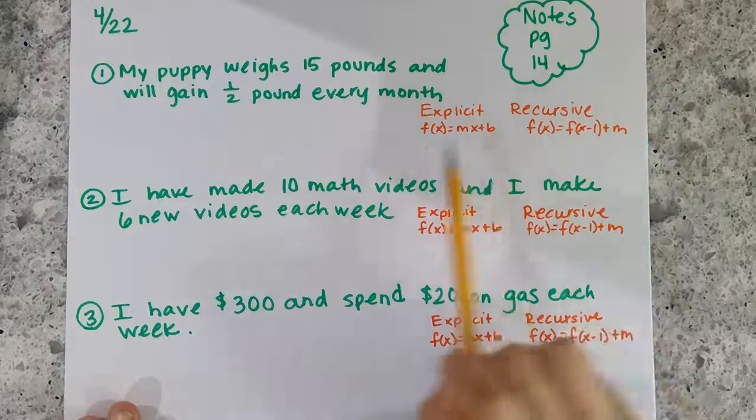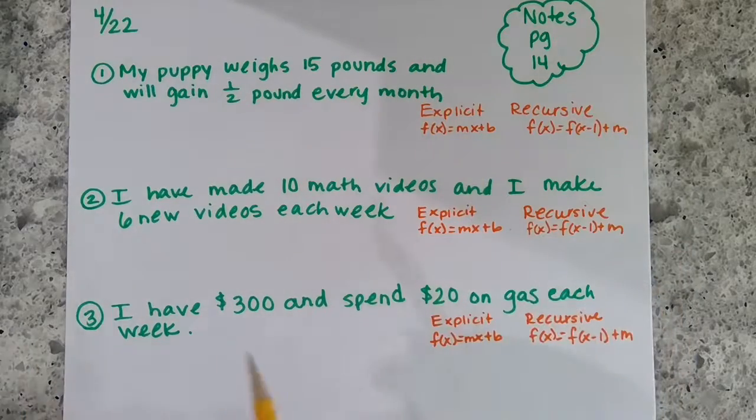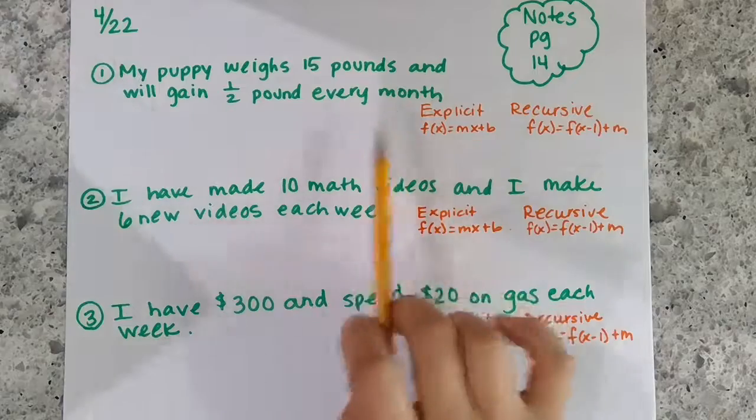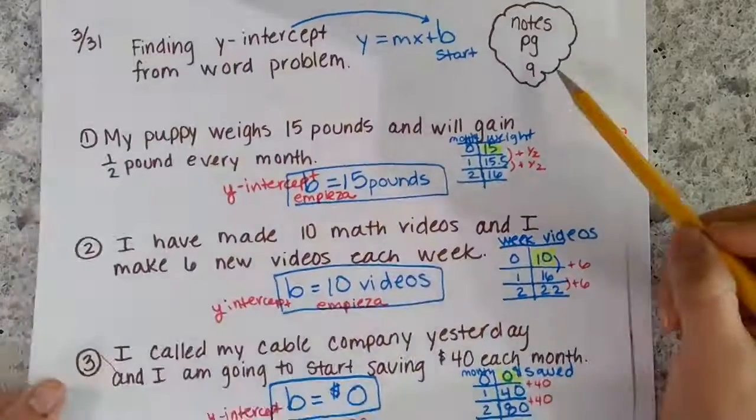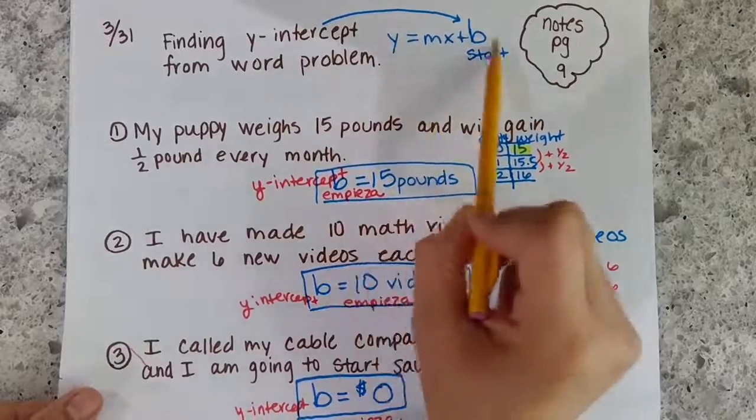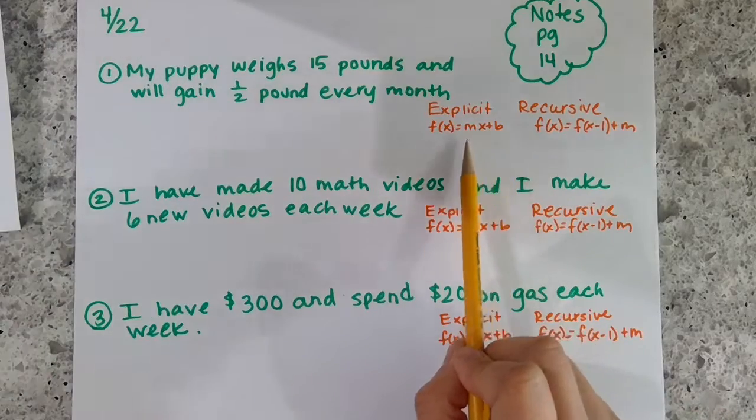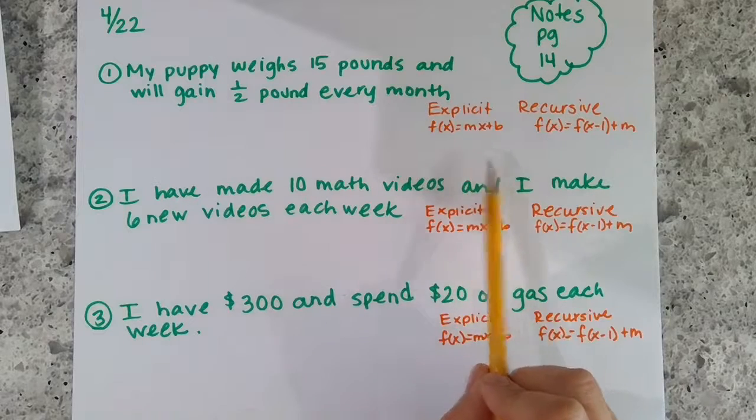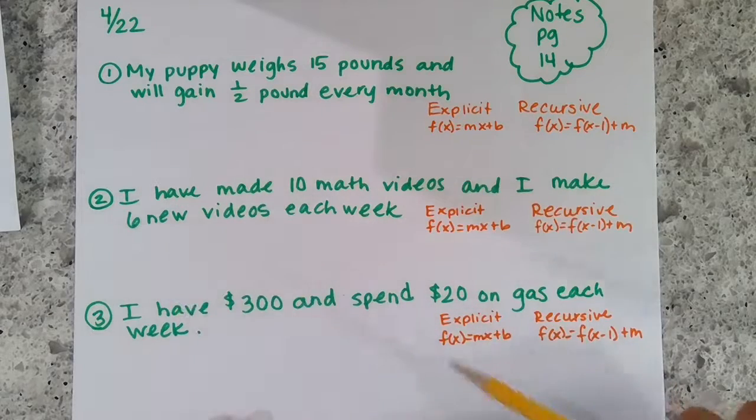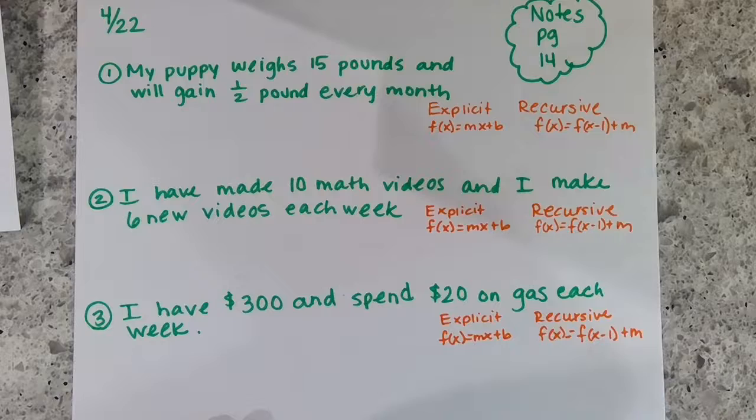Okay, so today's notes are putting everything together: the explicit and the recursive equation. You've actually done some of these notes before on page nine where you did the same thing, but there we were only finding the y-intercept. Today we're going to find the y-intercept, find the slope, write that explicit equation, and write that recursive equation. Take a minute to copy everything down. You can hit pause or just go along as we do the video.